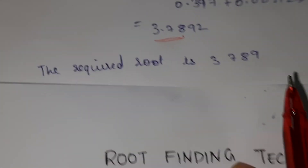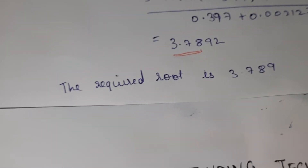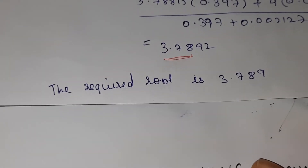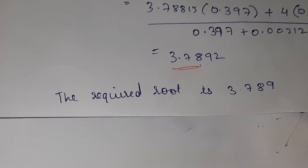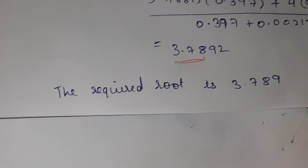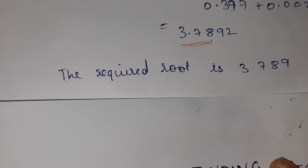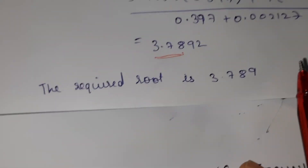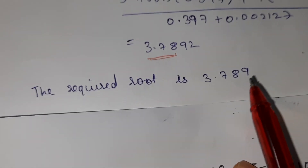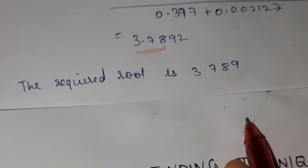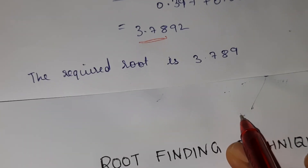So the required root is 3.789. That's how you do the false position method. In another video I'll explain another sum — it's a very easy one. After wrapping up these root finding techniques, we'll go to Laplace transforms.